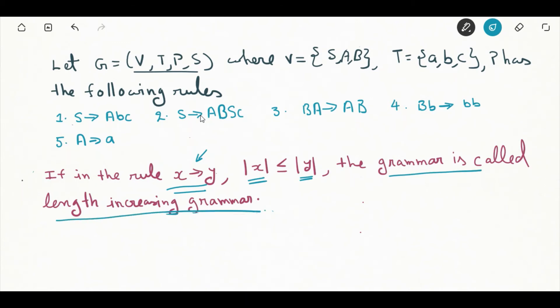You can see here LHS length of this side is less than or equal to this. Again the same case is here, here the lengths are equal, again equal, or equal. So we can say that this type of grammar is called as length increasing grammar.